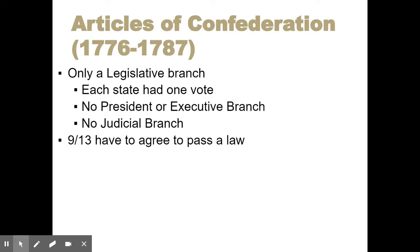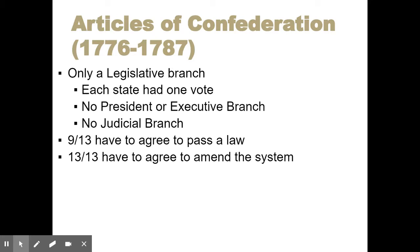In this Congress, 9 out of 13 states have to agree to pass a law — every state gets one vote. If you want to change any of those things, such as creating a president, adjusting the threshold to pass a law, or giving states votes based on their size, you need unanimous support from all 13 states to amend or change any of those things.